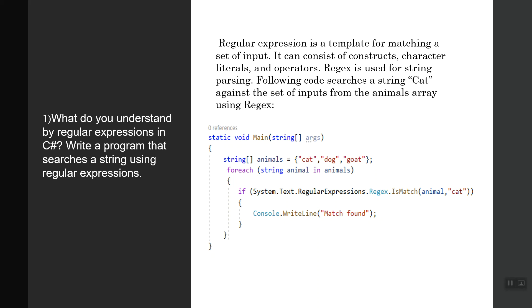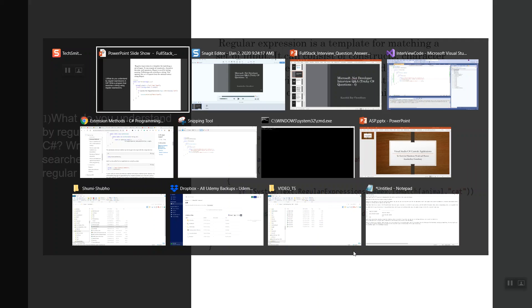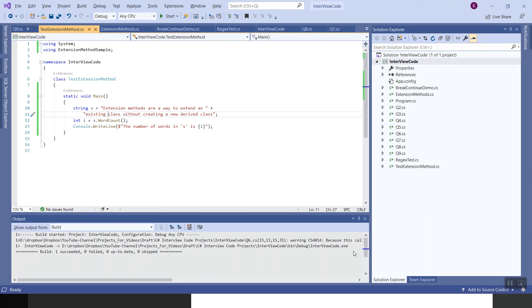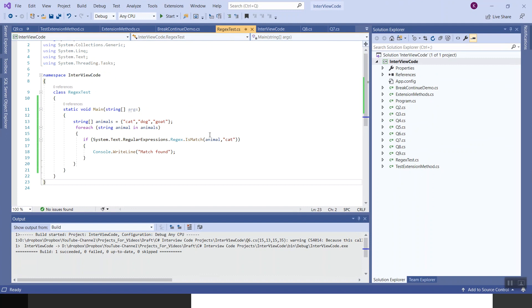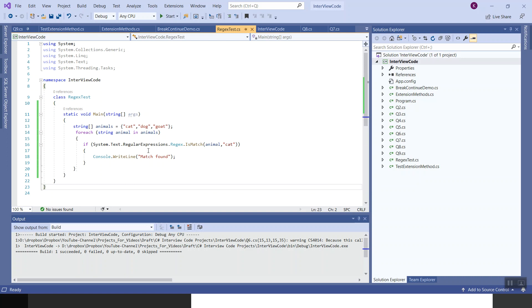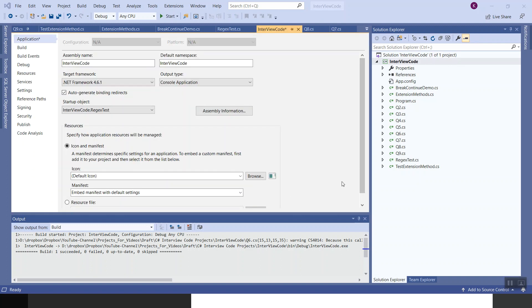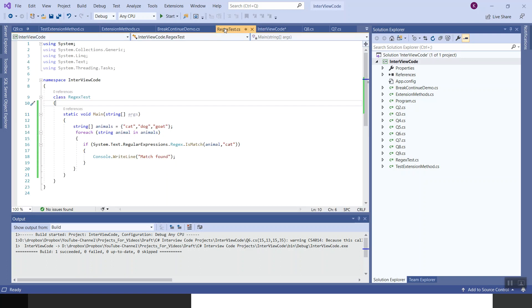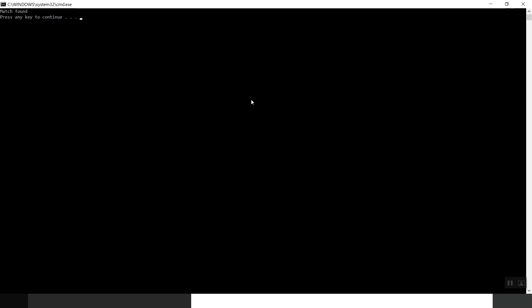Before going to the next question let's see how it works. Let's flip over to Visual Studio and go for the regex test. You need no special using statement. The default using system is good enough. If you run this application, let me bring the startup objects as interviewcode.regextest. Let's go back to the regextest class and run this application. We have got the match found.